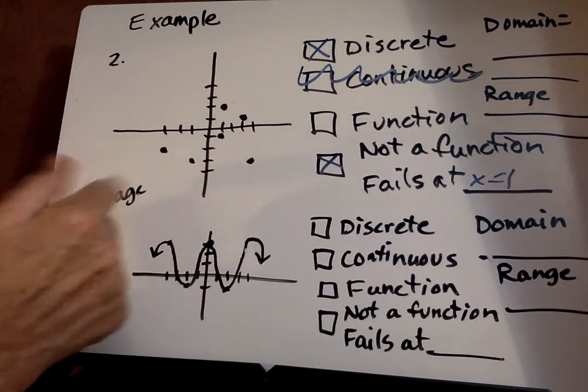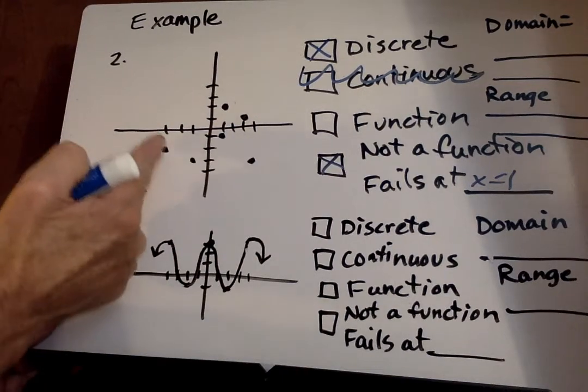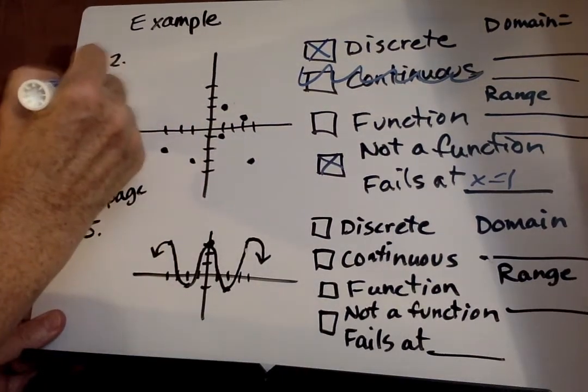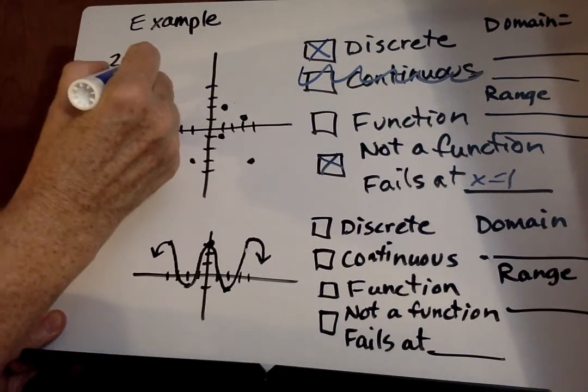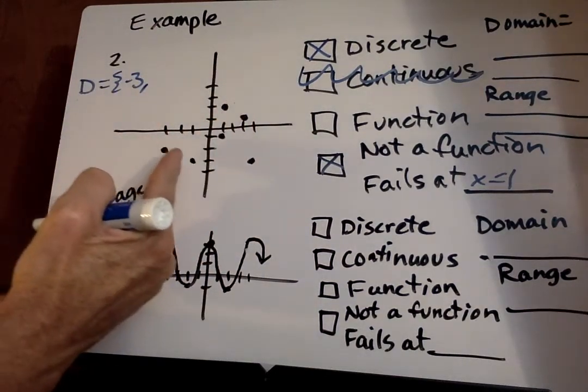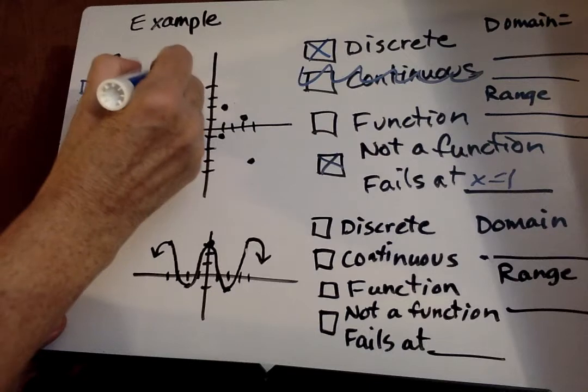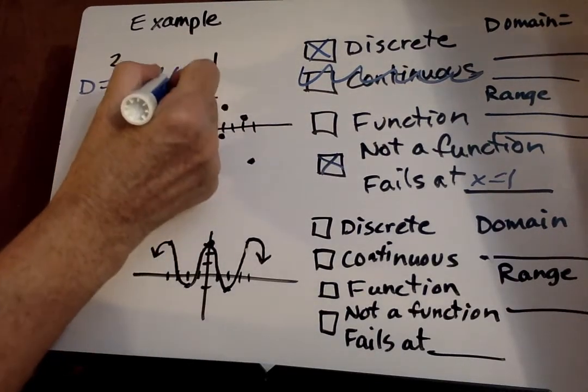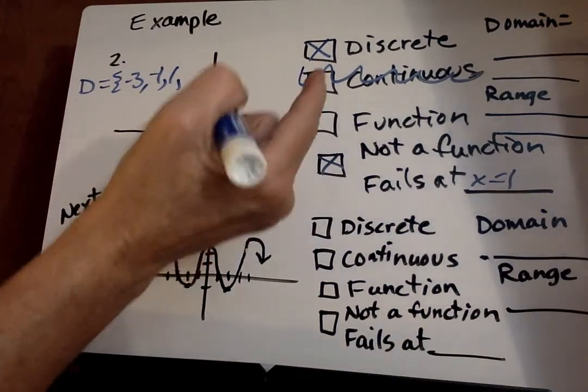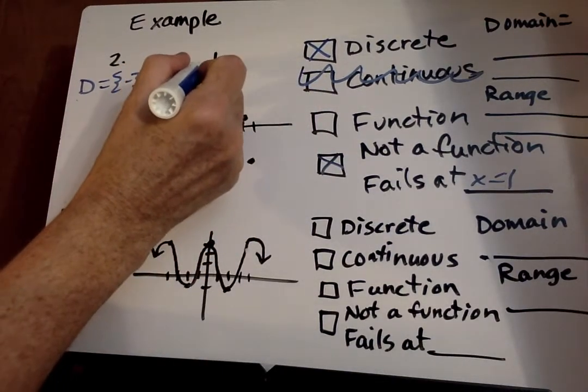And then if we want to do the domain we say our lowest number is negative 3 and I'm going to list it over here. So negative 3 and I'm going to go across negative 1. And again see how these are our x values as we go across 1, 3, and then 4.